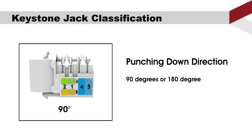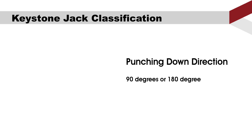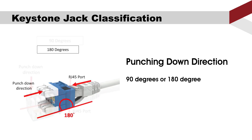Third, punching direction: 90 degrees or 180 degrees. You can tell by the angle between the direction in which the cable is punched down into the Keystone Jack and the RJ45 port. For 90-degree Keystone Jacks, the RJ45 port and punch down direction is vertical. For 180-degree Keystone Jacks, the RJ45 port and punch down direction is horizontal.